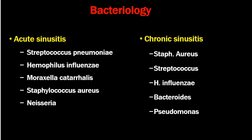In bacteriology, the most common bacteria in acute sinusitis is Streptococcus pneumoniae; in chronic sinusitis, Staphylococcus aureus is common. Other bacteria include Haemophilus, Moraxella, Staphylococcus, Neisseria in acute cases, and in chronic cases: Streptococcus, actinomyces, gram-negative bacteria, and Pseudomonas.